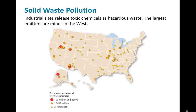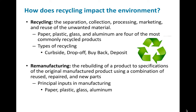Solid waste involves industrial sites that release toxic chemicals or hazardous waste. You can see those across the United States — a lot in the western portion, especially mines, and quite a bit in the central portion as well. Recycling is the separation, collection, processing, marketing, and reuse of unwanted material. Paper, plastic, glass, and aluminum are the four most common things we can recycle into new products. We have all kinds of different types of recycling — curbside, drop-off at processors, buying materials back, or depositing them — and all of these different versions do impact the environment.